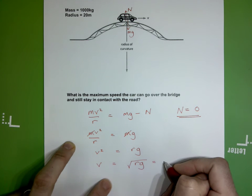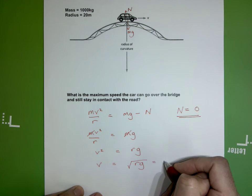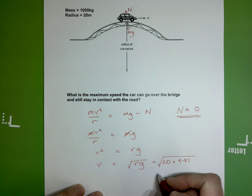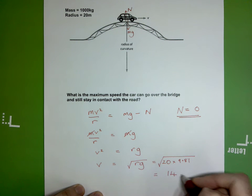Putting the numbers into the equation, I get 20 meters times 9.81, the square root of that, the final answer being 14 meters per second.